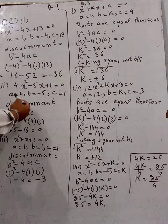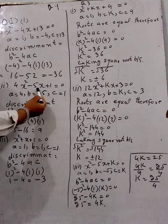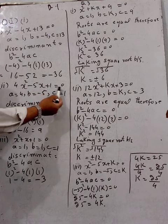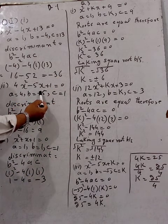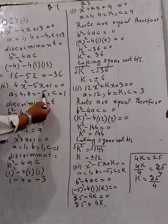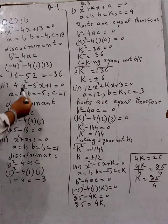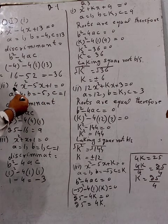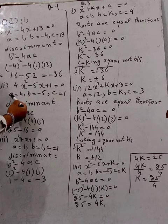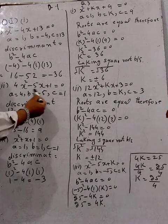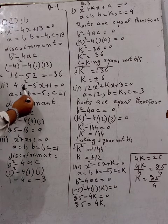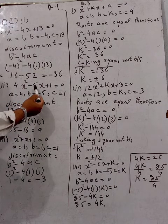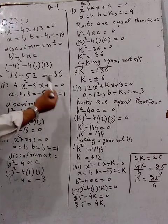Question 2: 4x squared minus 5x plus 1 is equal to zero. We identify a equals 4, b equals minus 5, and c equals 1.